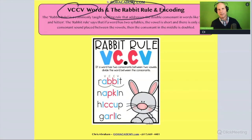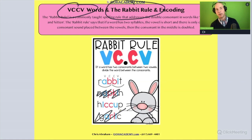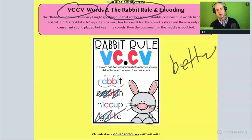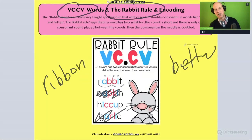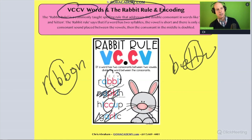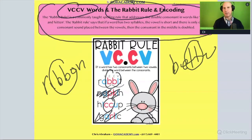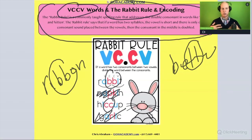The Rabbit Rule describes why, in words like rabbit, hiccup, better, and ribbon, we double the consonant — why there's a double consonant. You can pause the video now and read what the Rabbit Rule says. I'm just going to paraphrase it.